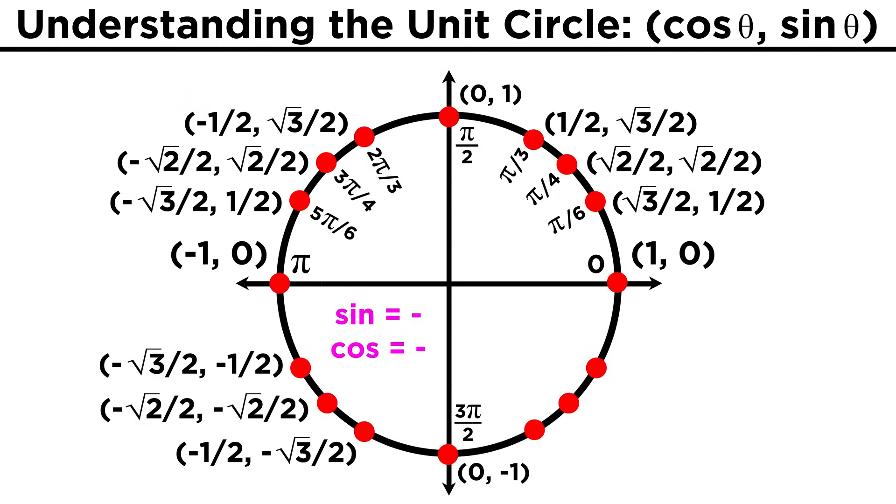Going into the third quadrant, both sine and cosine become negative, as x and y are both negative, but it's still all the same numbers. And into the fourth quadrant, cosines return to being positive, while sines remain negative.